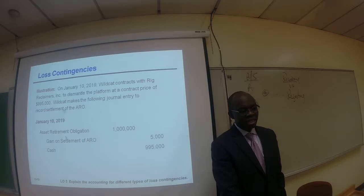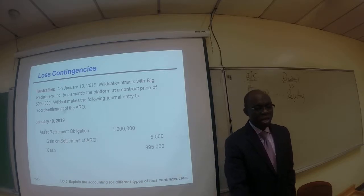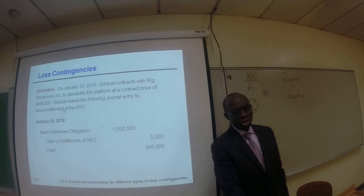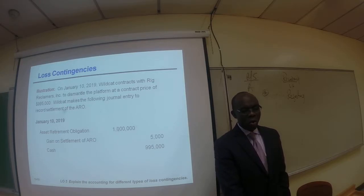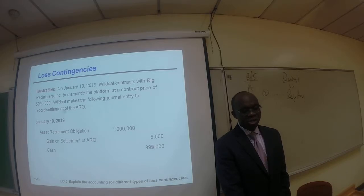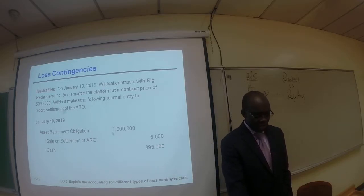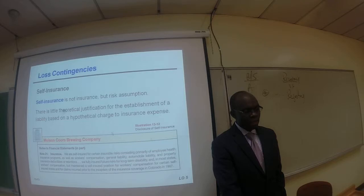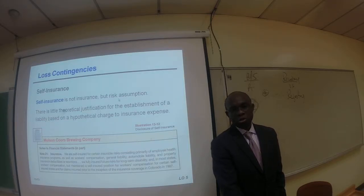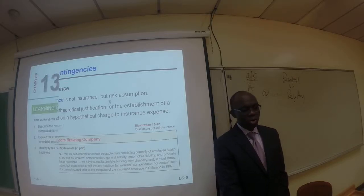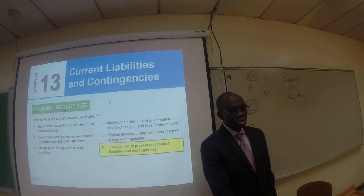We do that every year. At the end of the fifth year, the asset retirement obligation is debited to remove it, and we pay out $995,000. The difference between that and the $1,000,000 is recognized as a gain on settlement of the ARO. Self-insurance is not insurance but rather risk assumption — instead of insuring your company, you are taking the risk on your own.